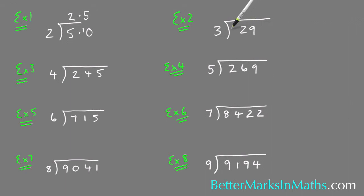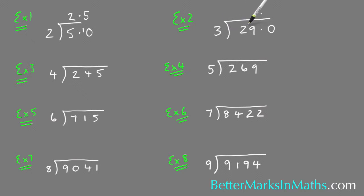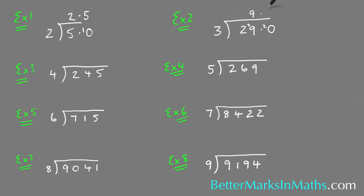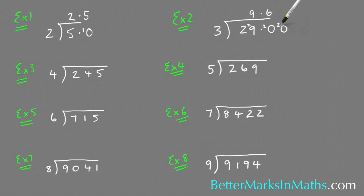Example two: how many threes in 29? It's going to have a decimal remainder, so I'm going to set it up with zeros so you can add as many as you need. How many threes in two? There's none, so carry that two. How many threes in 29? There are nine threes in 27, so there's a remainder of two. How many threes in 20? There's six with a remainder of two. Adding another zero, and it looks like it's going to have a remainder of two each time I divide three into two.